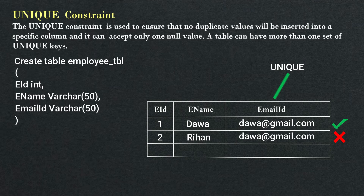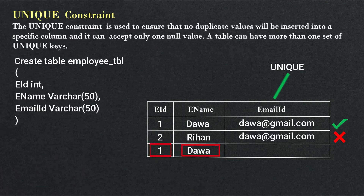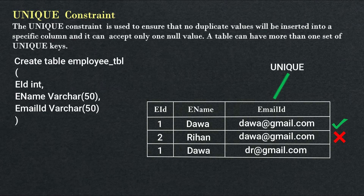But if you want, you can enter the same duplicate value in the employee_id and employee_name columns. For example, if we insert a third row with employee_id 1, employee_name 'Dawa' — the same values as the first row — but change the email_id to 'dr@gmail.com', it will still be inserted in the table. Because we have not used unique constraint on employee_id and employee_name columns, so we can input duplicate values there. But in email_id, we cannot input a duplicate value because unique constraint is applied to that column.